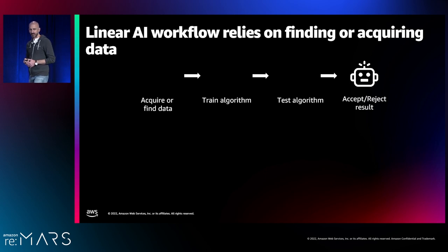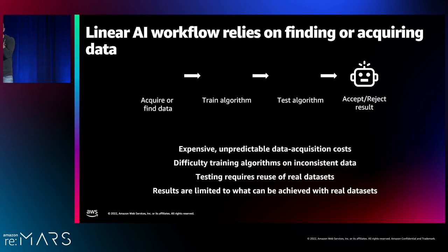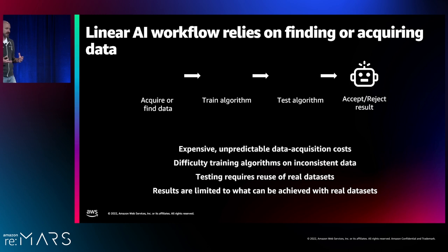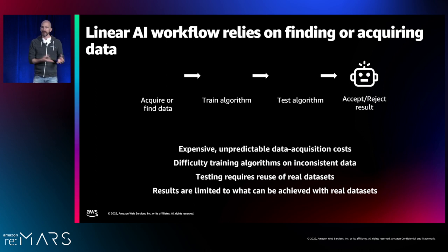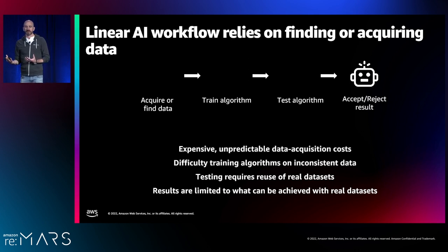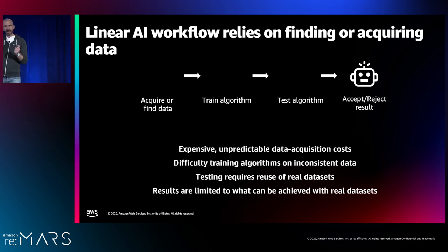Let's talk through what this looks like in practice if we're starting to build an algorithm. The implication of all that difficulty with collecting data is that we end up with static data sets. In large part, we think about data in the AI ML world as an asset that we're going to use. And that leads to this linear engineering flow where we use a data set that we happened to have been able to collect, usually at great expense and time — move it through a model training process, maybe change some hyperparameters, and then basically get to a result that we either accept or reject.